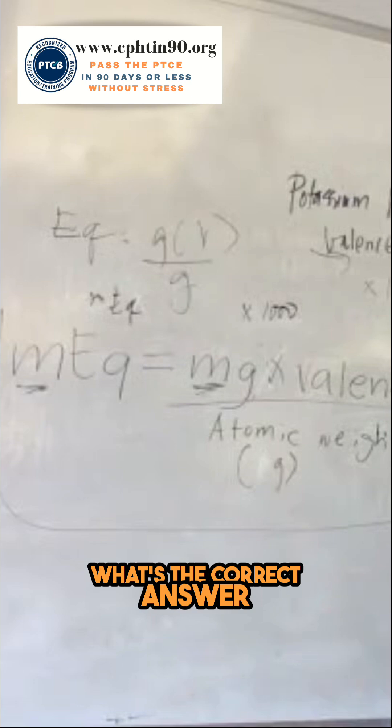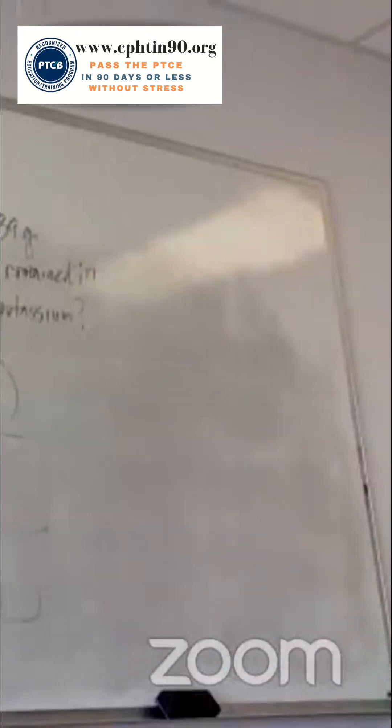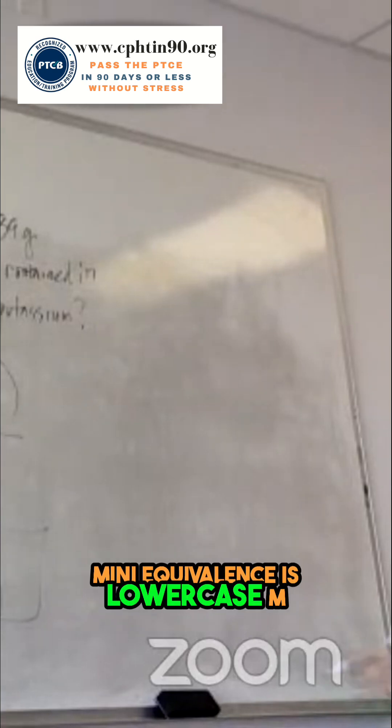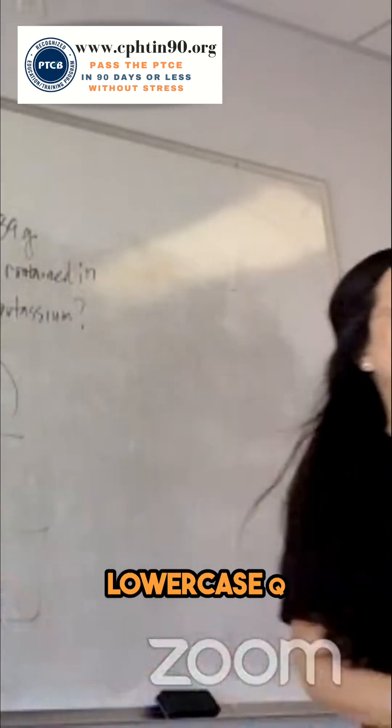What's the correct answer? Twenty. It's this one, 20 mEq. Here, take note: milliequivalents is lowercase m, capital E, lowercase q. Clear?